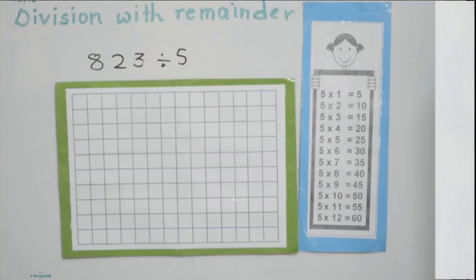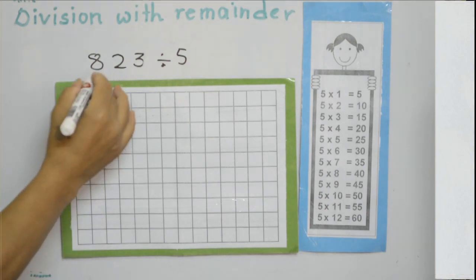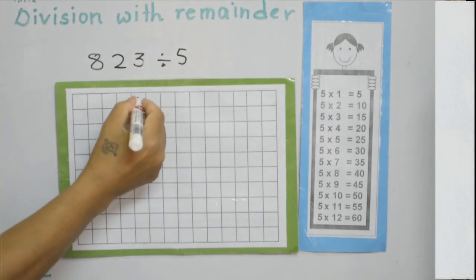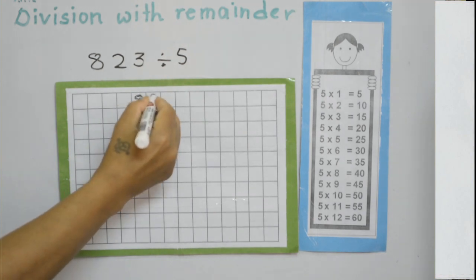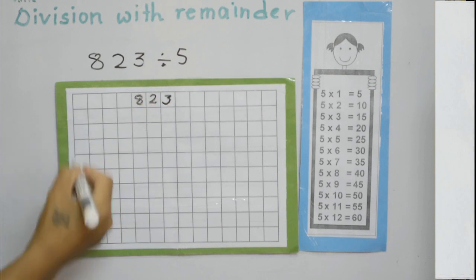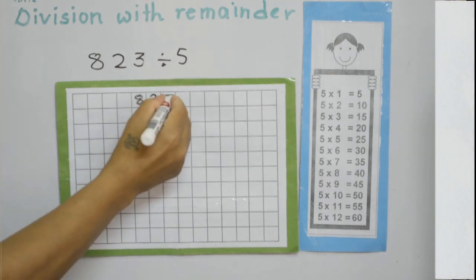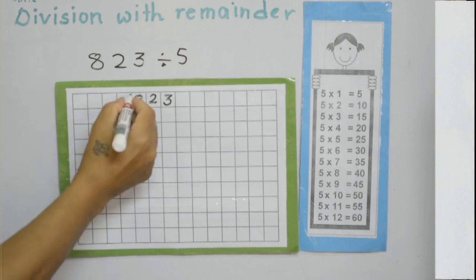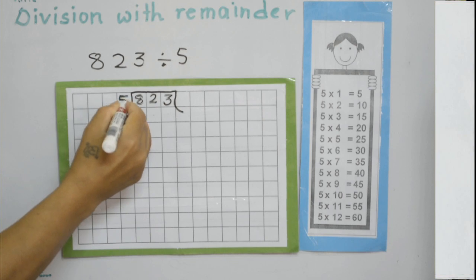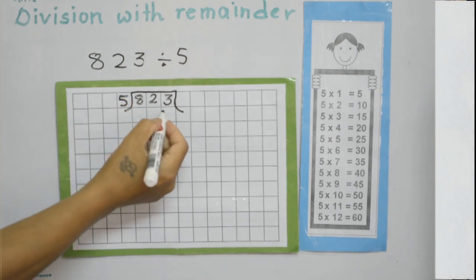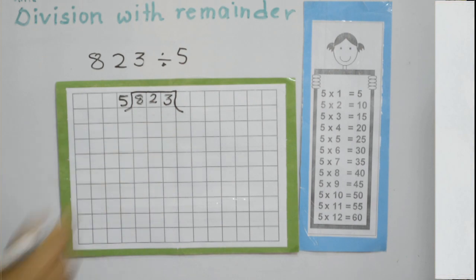Hi dear, today we will learn division — division with remainder. Look at this example: 823 divided by 5. Write this question on the screen; write each digit in each box. 823. Make the division house here; we are going to divide by 5.